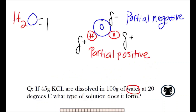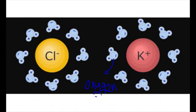We know that water is a polar molecule, in that it has a partial positive and partial negative end due to its hydrogens and oxygens, respectively. Since opposites attract, the oxygens from the water molecules get pulled towards the potassium, which has a positive charge, while the hydrogens are attracted towards chloride's negative charge. Therefore, once our 45 grams of KCl are put into the 100 grams of water, the ionic bonds between the two elements are split apart into separate ions, with each respective part of the water molecules surrounding and dissolving our ions.